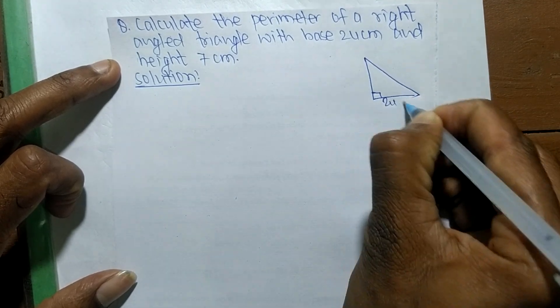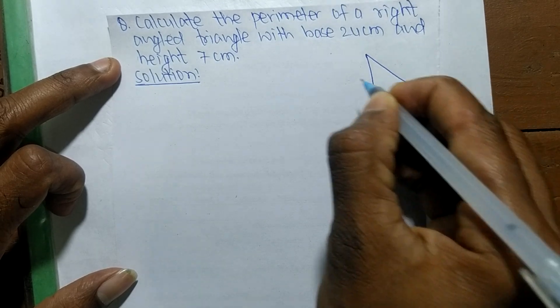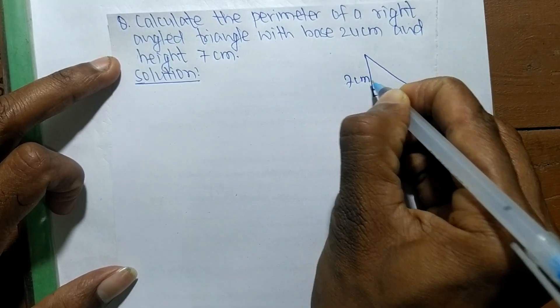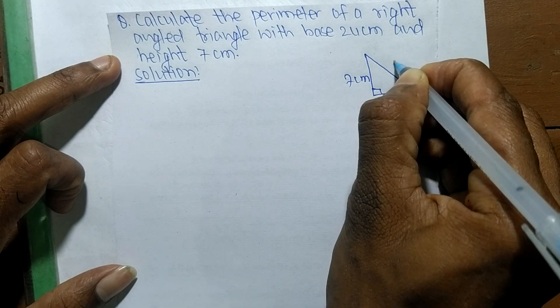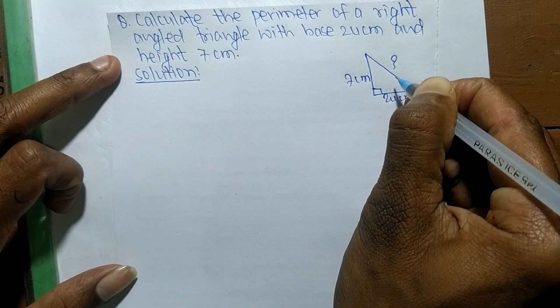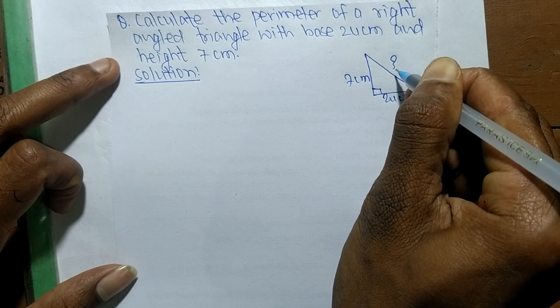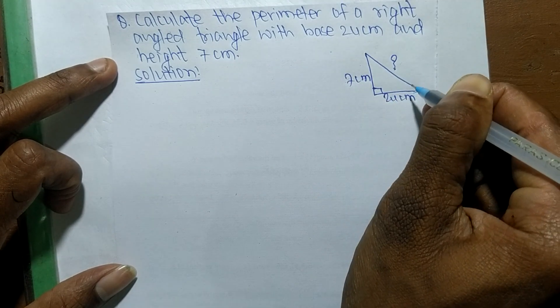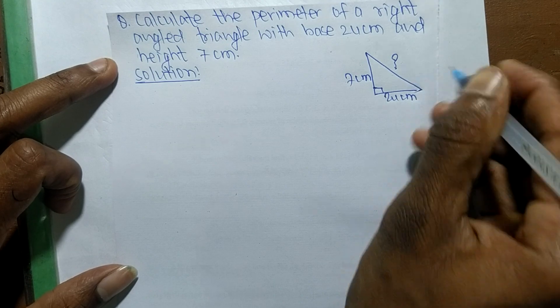Its base is 24 centimeters and its height is 7 centimeters. You have to determine its perimeter. For that, first we have to determine the remaining third side, and after that we have to determine its perimeter.